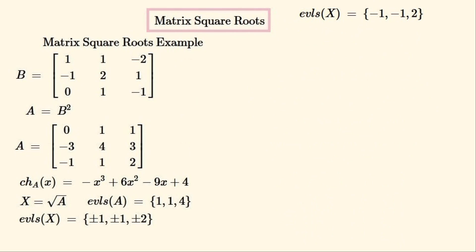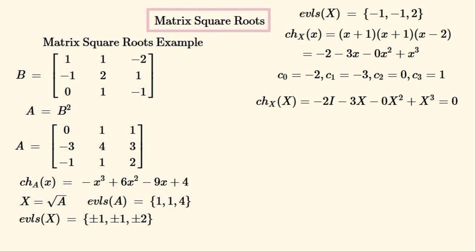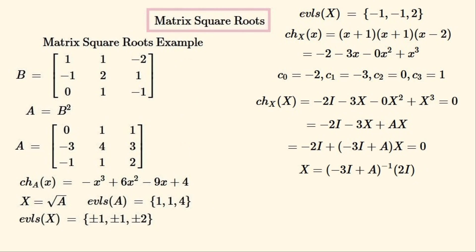We can then try to find the next square root, which has some negative eigenvalues, and should give us another square root of A. We'll reconstruct the characteristic polynomial of X from these eigenvalues. This is the characteristic polynomial of X — I wrote down zero as a coefficient to keep track of that term. These are the coefficients of this polynomial. We substitute the matrix X into this polynomial, set it equal to zero, then substitute A in for X² and simplify. We factor out X and solve the equation. Substituting A in gives us another matrix, which is another square root of A.